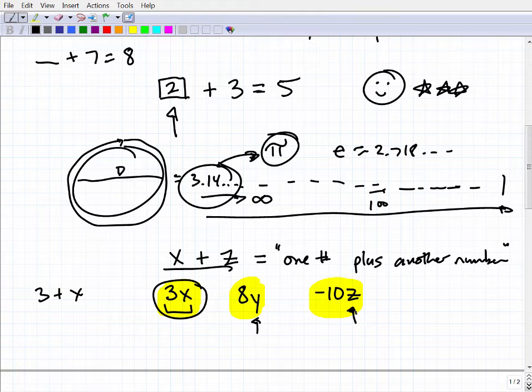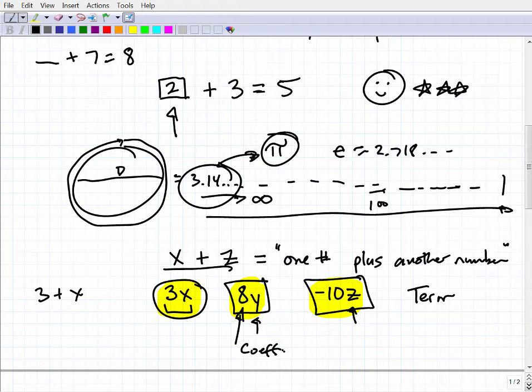So in algebra, a little terminology: these little guys here are considered terms. This is a term. And the number in front of the term is called a coefficient. We have a coefficient and we have a variable, and sometimes we'll even have powers. Let me show you how that looks. We can have 3x and 3x squared. This is one term—the coefficient is 3, the variable part is x. And this is another term. The coefficient is 3, but the variable part here is x squared.